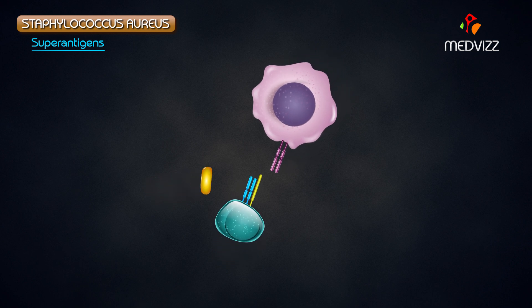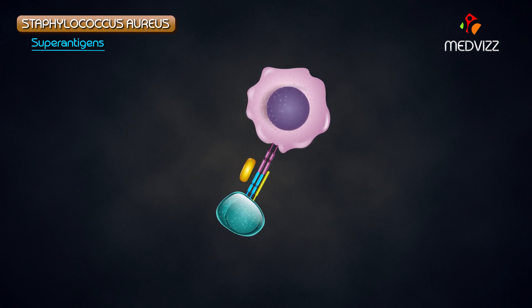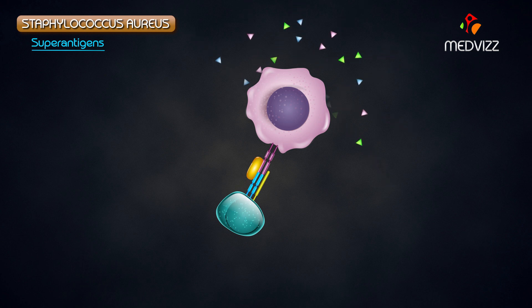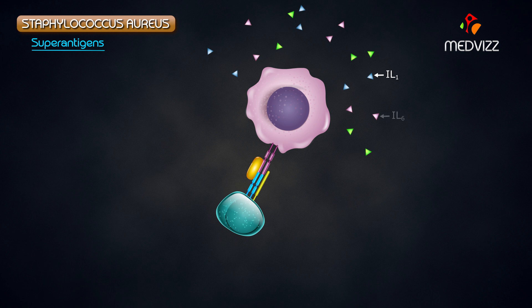Superantigens cross-link the alpha chain of MHC class II, present on antigen-presenting cells, with the beta chain of the variable region in T cells. Because of this, there is enhanced inflammation and activation of macrophages. Those macrophages release acute-phase reactants like IL-1, IL-6, and TNF-alpha. TNF-alpha is very toxic, and fever actually protects us from the effects of TNF-alpha.